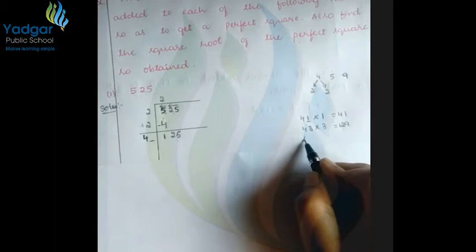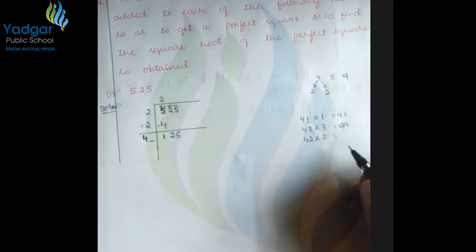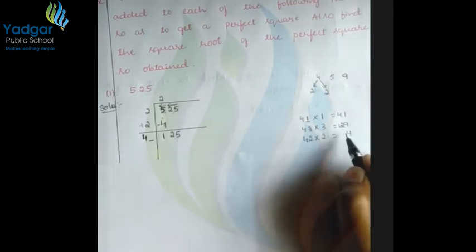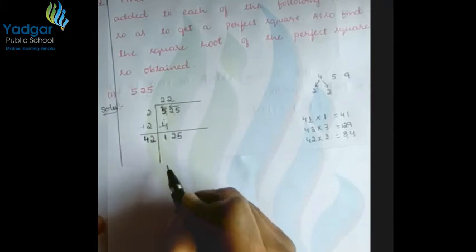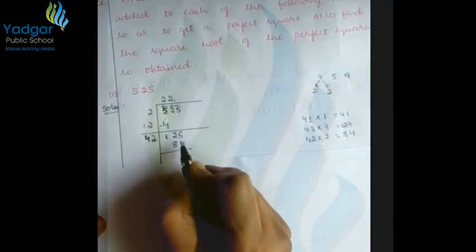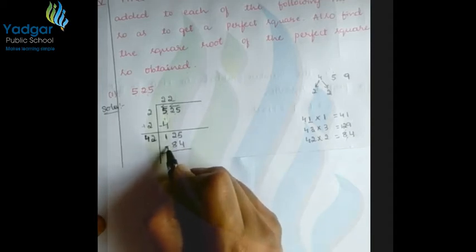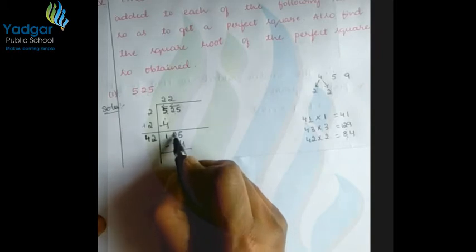42×2=84. Now checking: 129 is greater than 125, so we take 84. We subtract: 5 minus 4 is 1, 12 minus 8 is 4, giving remainder 41. The quotient so far is 22. The remainder is 41.